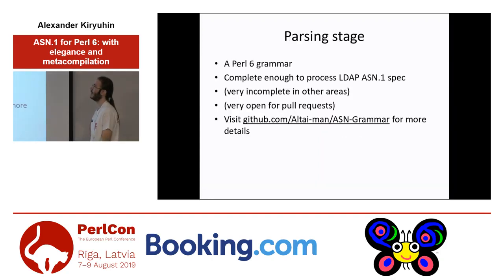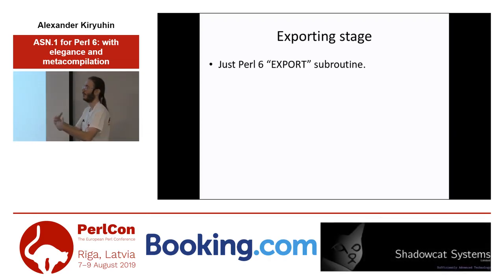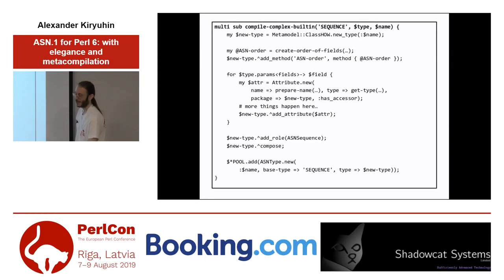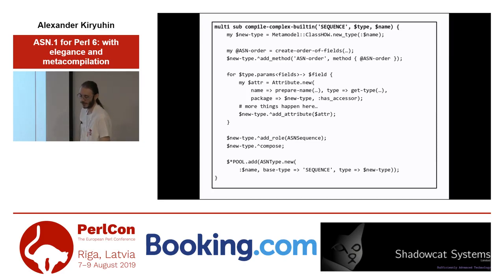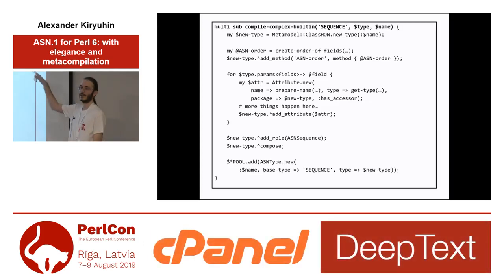The parsing stage is just a Perl 6 grammar — it is complete enough to process the LDAP spec because I worked with that, and it is pretty incomplete in other areas, so all requests are welcome. And the exporting stage — how do we export things from ASNMeta to some other module? Well, it is just the export subroutine you just saw. And now some scary code — let's be brave and break it down. It is not a full compiler, of course, just a subroutine that compiles a sequence type. We have a type with meta information from our AST and some name.